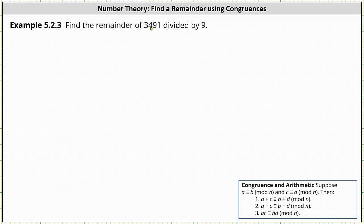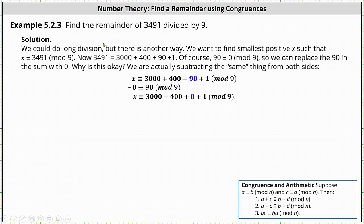We're asked to find the remainder of 3,491 divided by 9. While we could perform long division, let's find the remainder a different way. Let's use the congruence modulo n and arithmetic properties shown below, which means we want to find the smallest positive x such that x ≡ 3491 (mod 9).